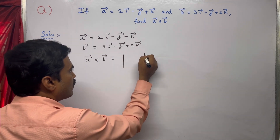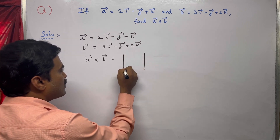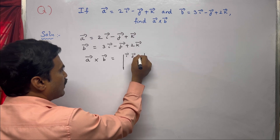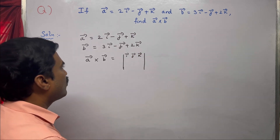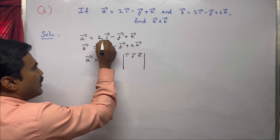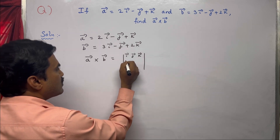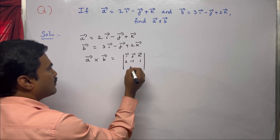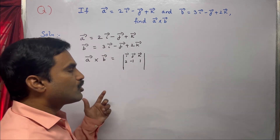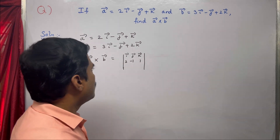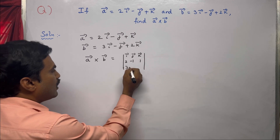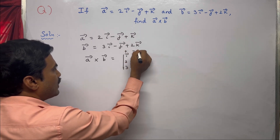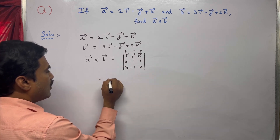We are forming the determinant. The first row is i̅, j̅, k̅. The second row contains the elements of a̅: the i̅ coefficient is 2, j̅ coefficient is −1, k̅ coefficient is +1. The third row contains the elements of b̅: 3, −1, +2. Now solve using the plus-minus-plus sign pattern.